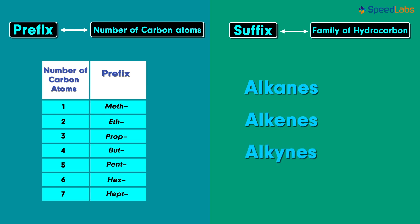Alkanes are assigned the suffix '-ane,' taken from the last letters of the name itself. Similarly, alkenes are given the suffix '-ene,' and alkynes use the suffix '-yne.' Now we can combine the prefix and suffix together to get a complete name for our compounds.